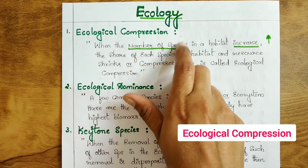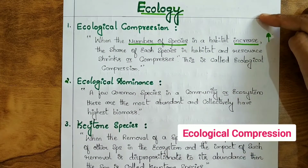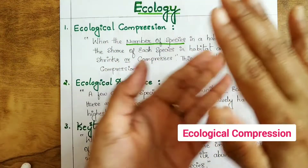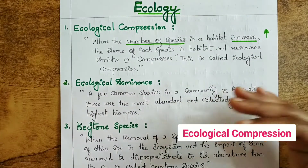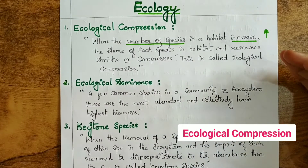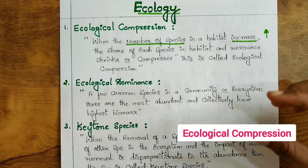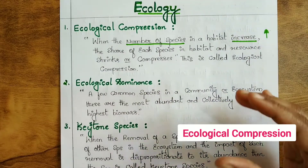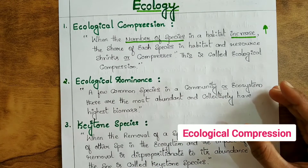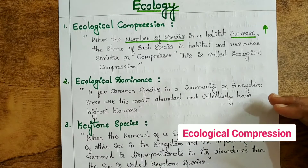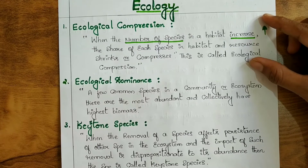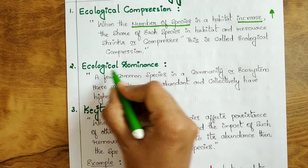So ecological compression means: when the number of species in a habitat increases, the share of each species in the habitat and resources gets compressed. You can also define it as: in the presence of competing species, each species is restricted in its search and exploitation of habitat resources. I hope you understood ecological compression. Let us move on to ecological dominance.